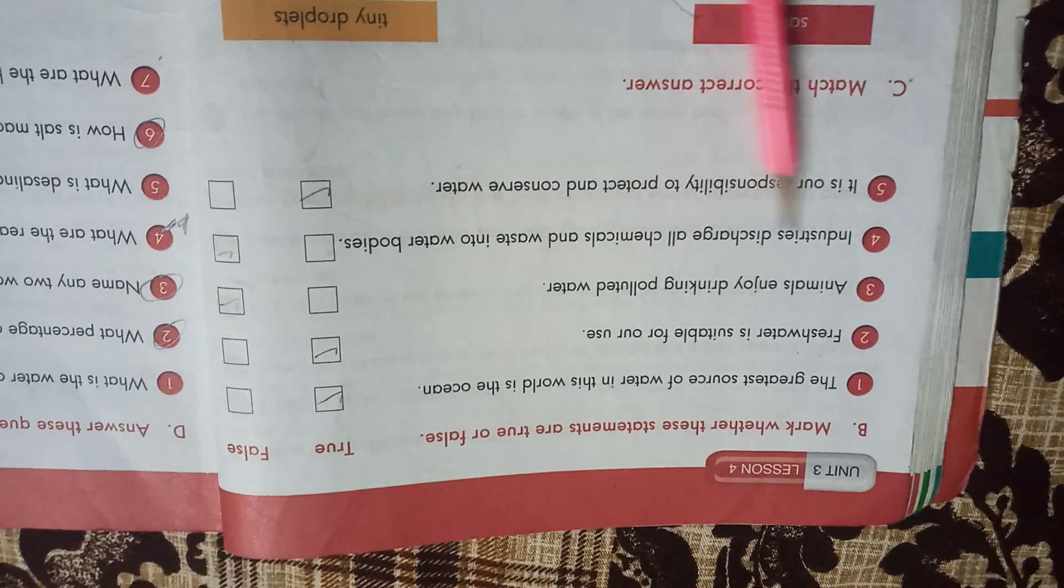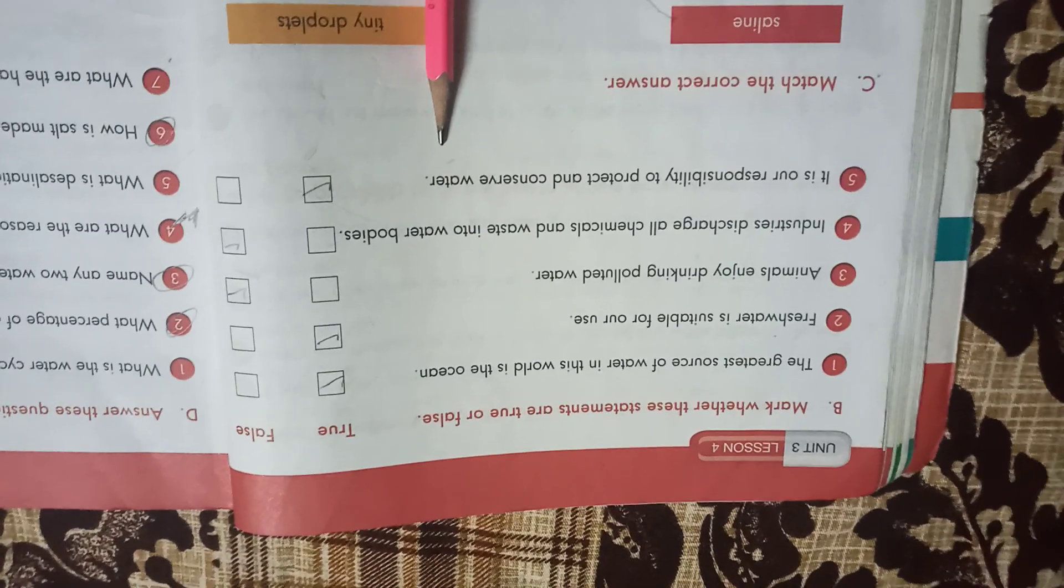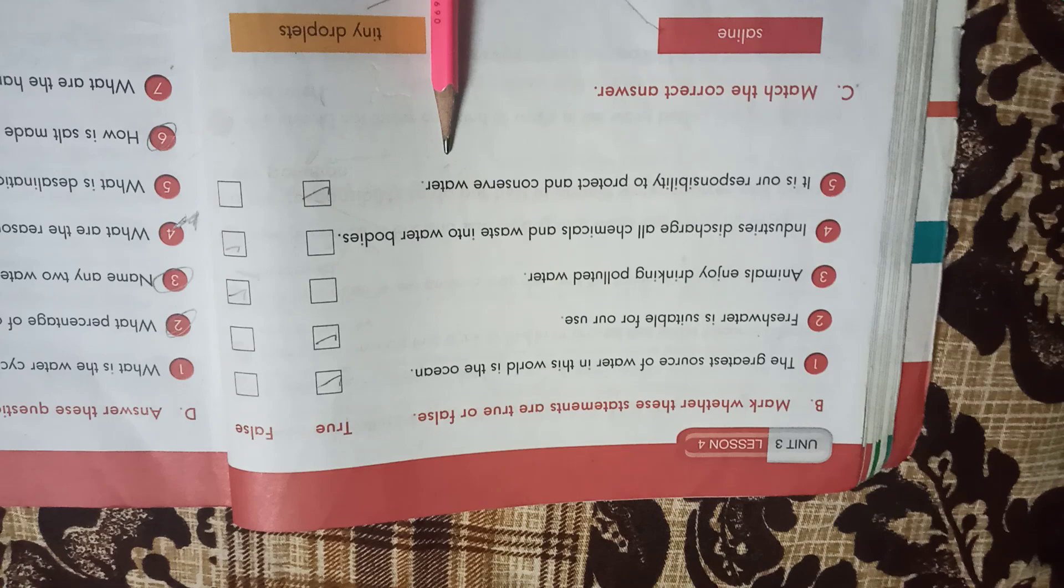And the fourth one: industry discharge chemicals and waste into the water bodies. Last one, it is our responsibility to protect and conserve water. To protect water, don't throw any rubbish on the lake, on the river, on the ocean. These are all the precautions to protect water from pollution. It is our responsibility to avoid water pollution.